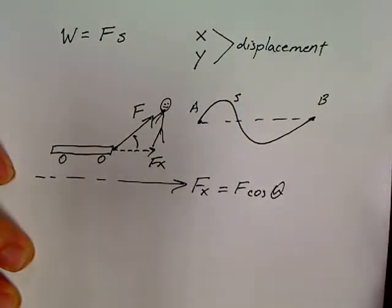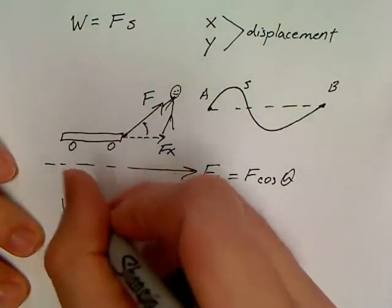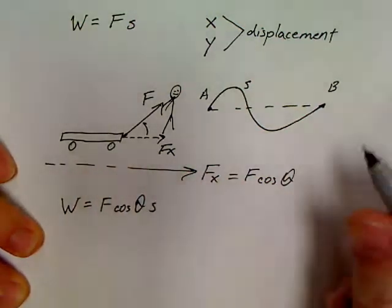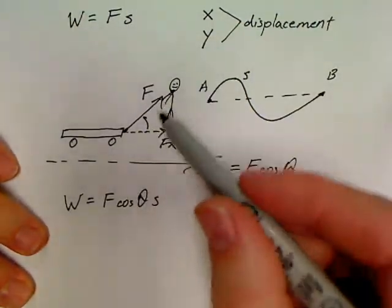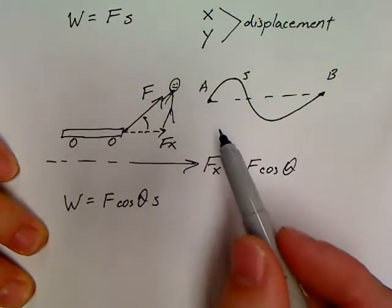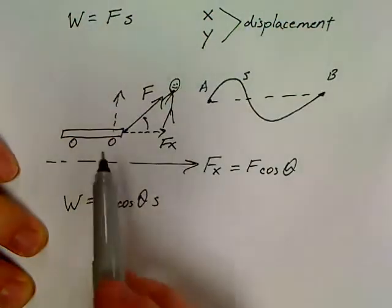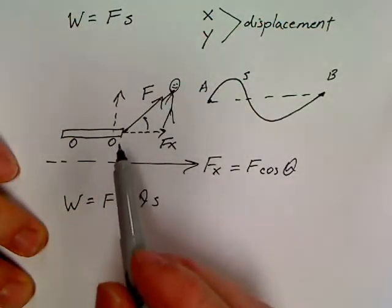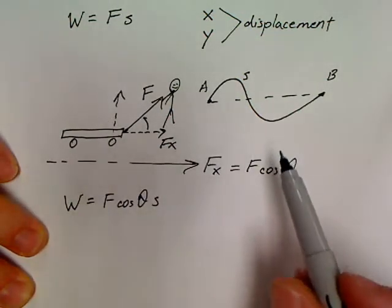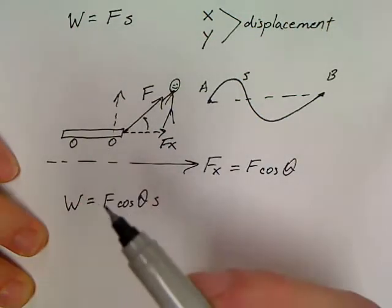All we've got to do to find the component in the direction of the movement is just go F cosine theta. So, another equation we'll use, along with this Fs, is work is also equal to F cosine theta s. Because whenever something's moving at an angle, not all of that force is actually going into making this move. Part of this force is actually lifting the wagon off the ground. The other force is actually making the wagon move. So, all we're interested in is the part that's actually making the wagon move in this case.